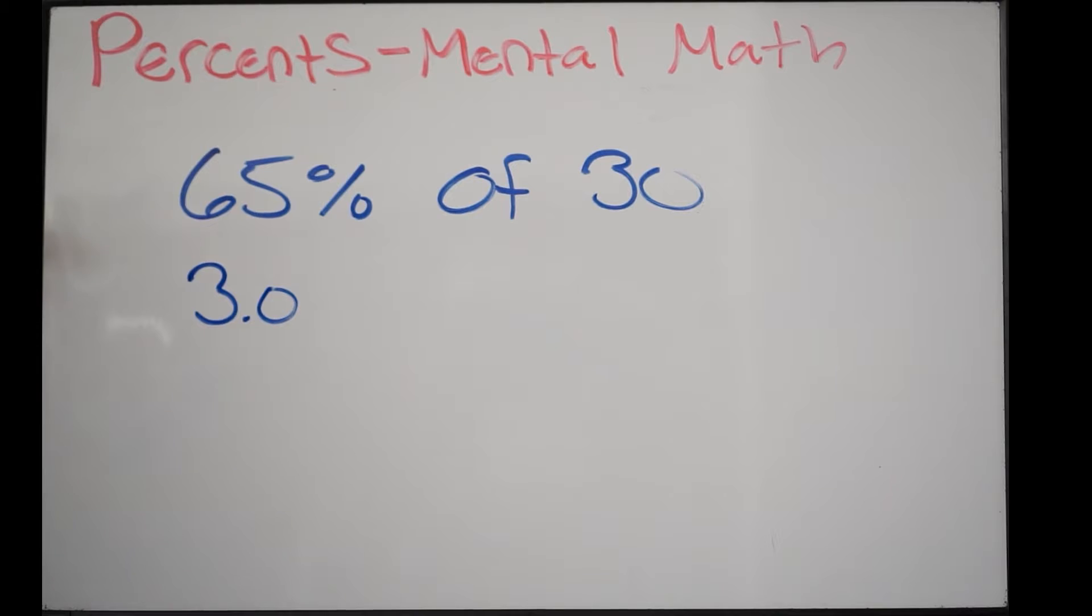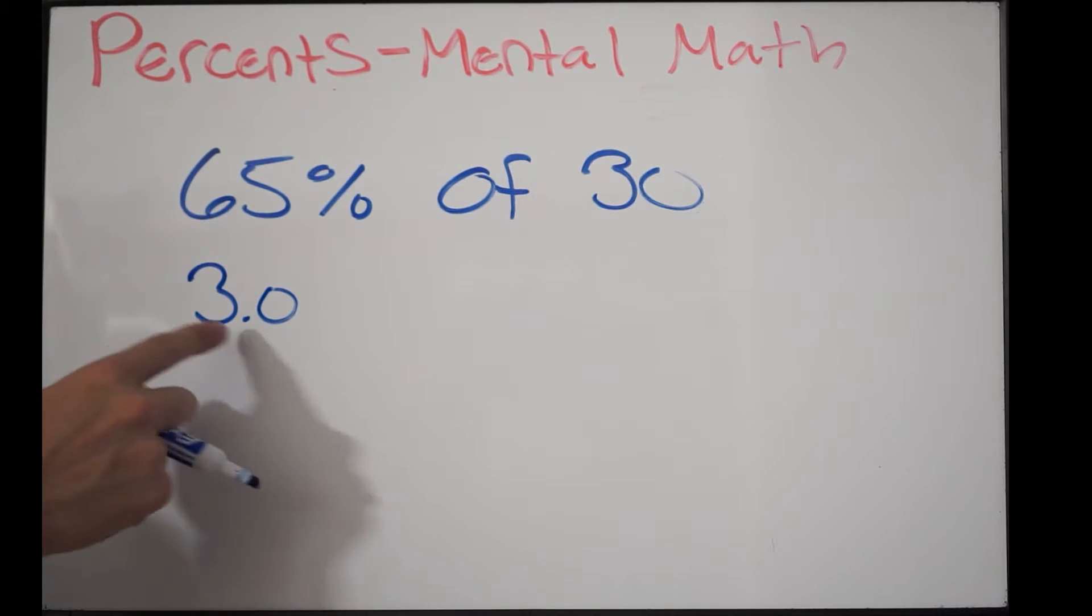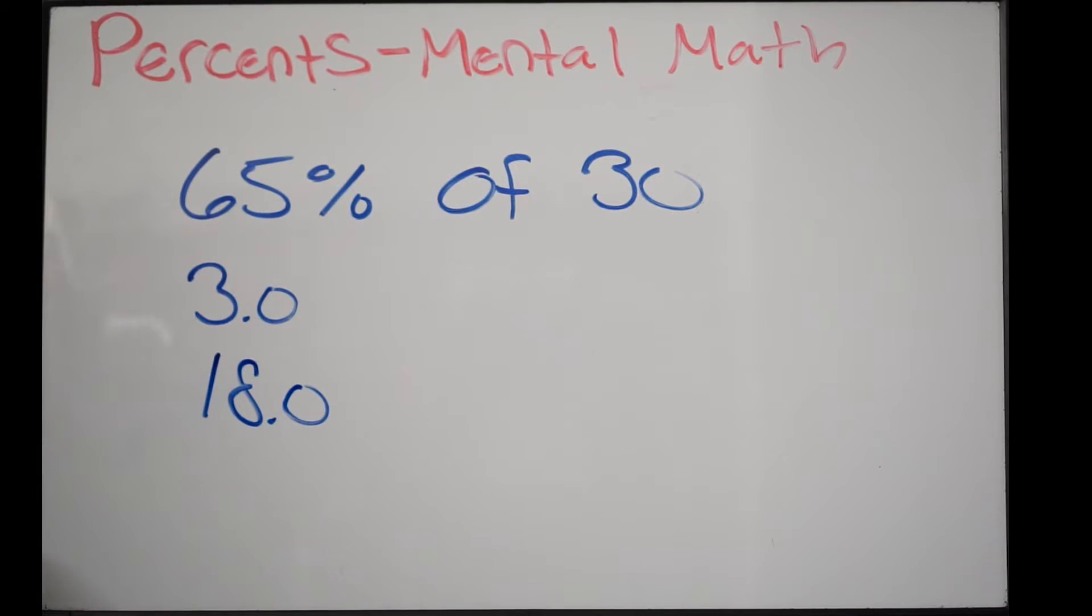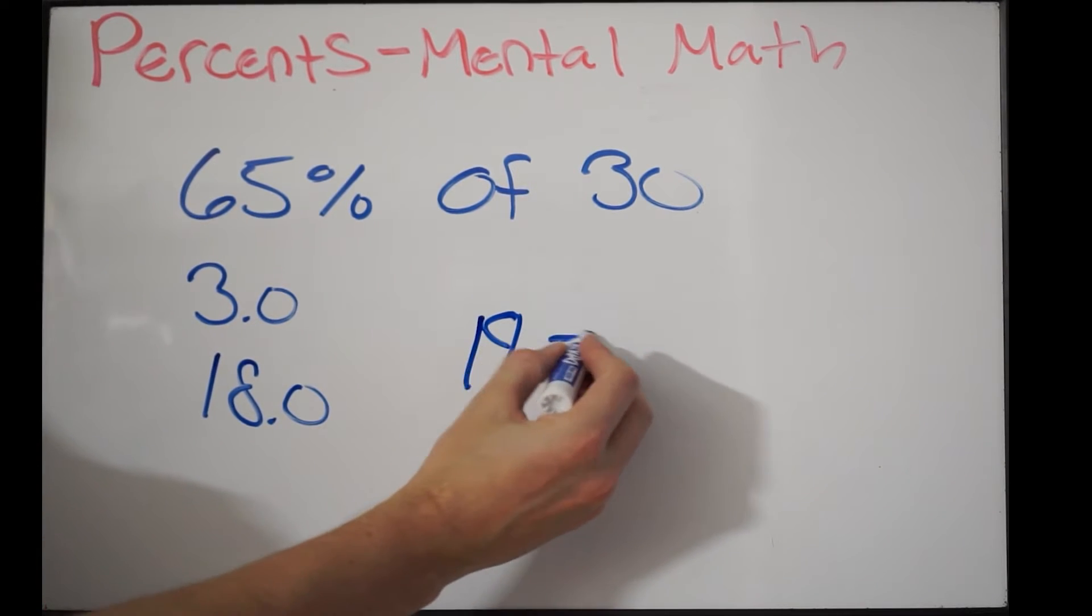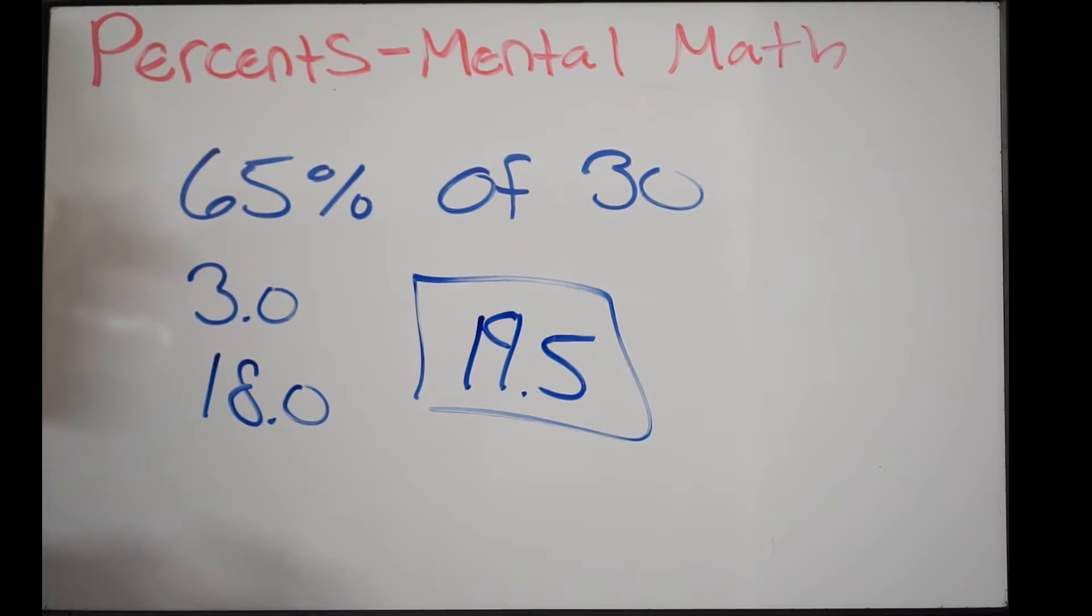That's 10%. So to find 60%, simply just multiply this by 6. That gives me 18.0. I have to account for that last 5%. Here's 10%. Simply divide it by 2. That gives you 1.5. We're going to add it here, 19.5. Over time, you can do this in your head as you practice. So 65% of 30 is going to be 19.5.